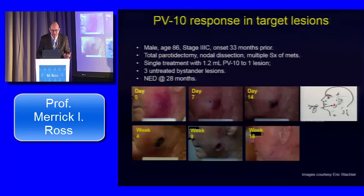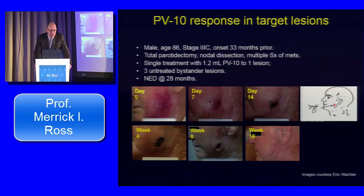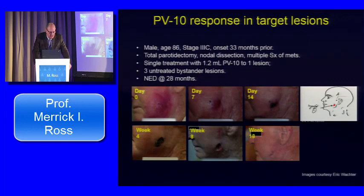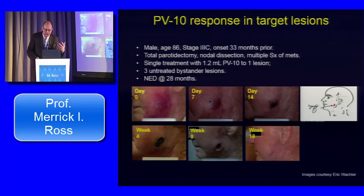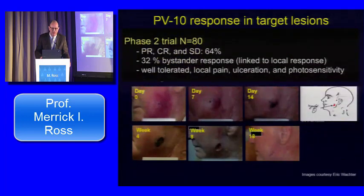Splenocytes from PV10-treated mice showed increased production of gamma interferon, increased in vitro lysis of B16 cells by T cells, and transfer of T cells resulted in delay of tumor growth in other animals — providing preclinical evidence of an immune response. In a clinical example, an elderly patient with a lesion on his cheek and three other subcutaneous scalp metastases had only the facial lesion injected. The rose-colored agent causes photosensitivity, quick disruption of the tumor, ulceration, and eschar. The injected tumor resolved, and all other sites resolved as well — a clear bystander response.